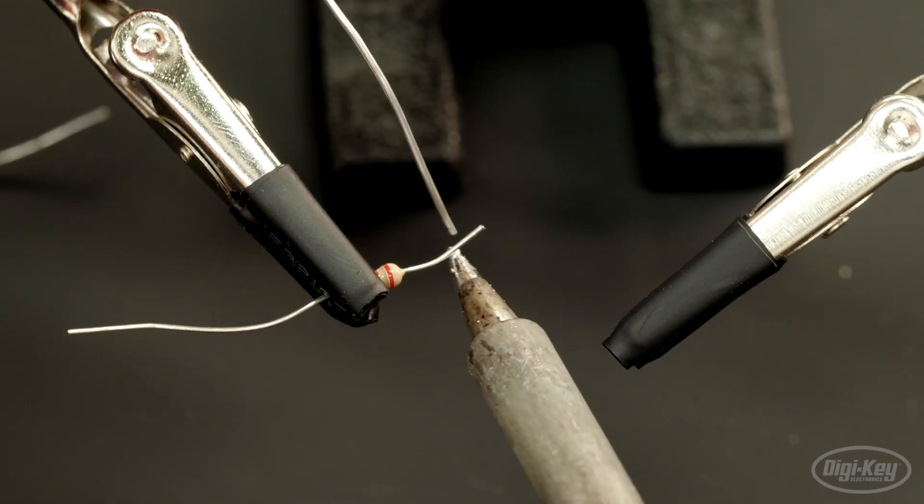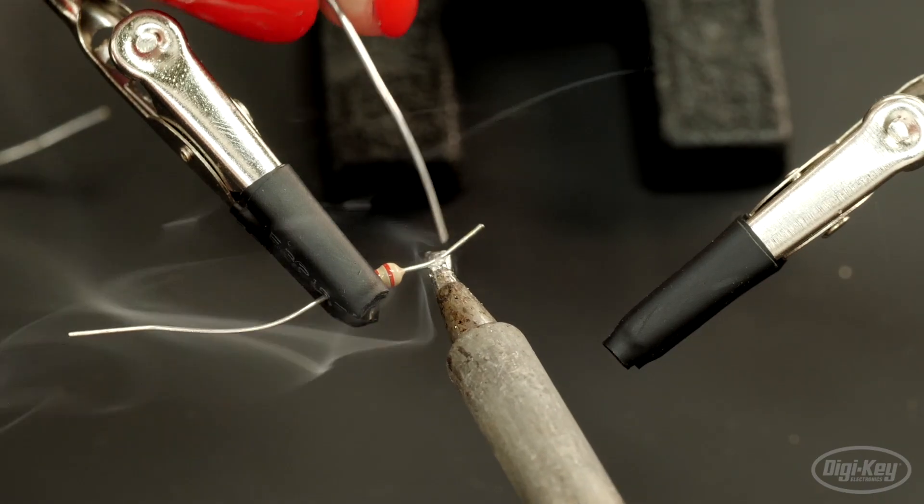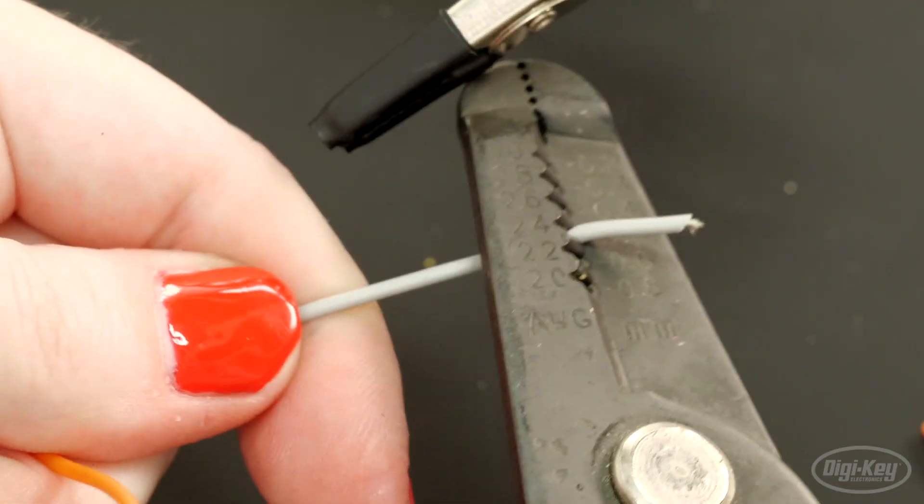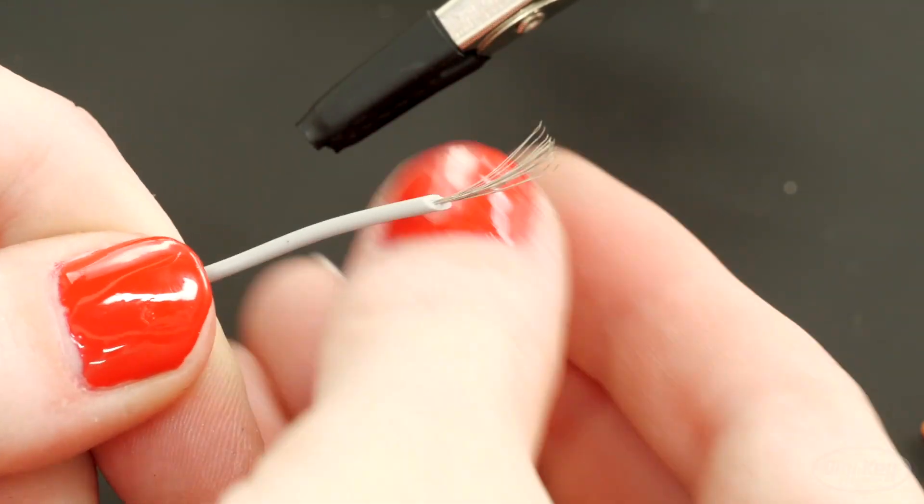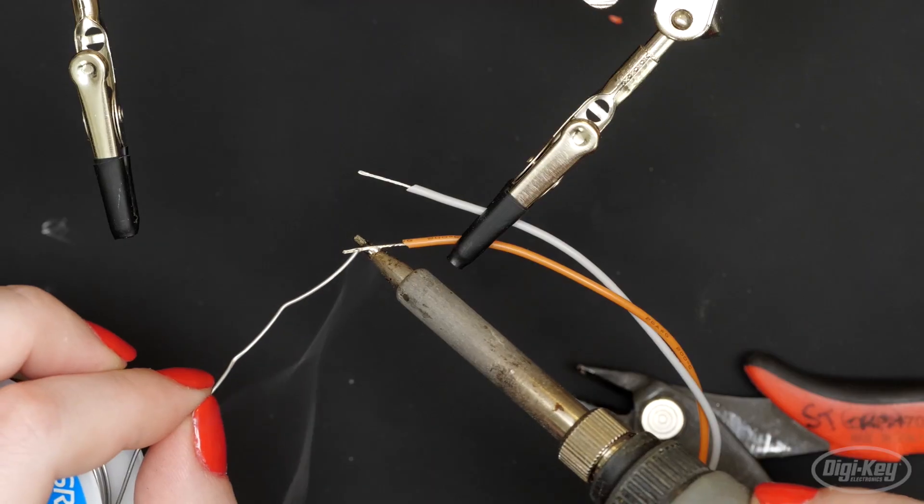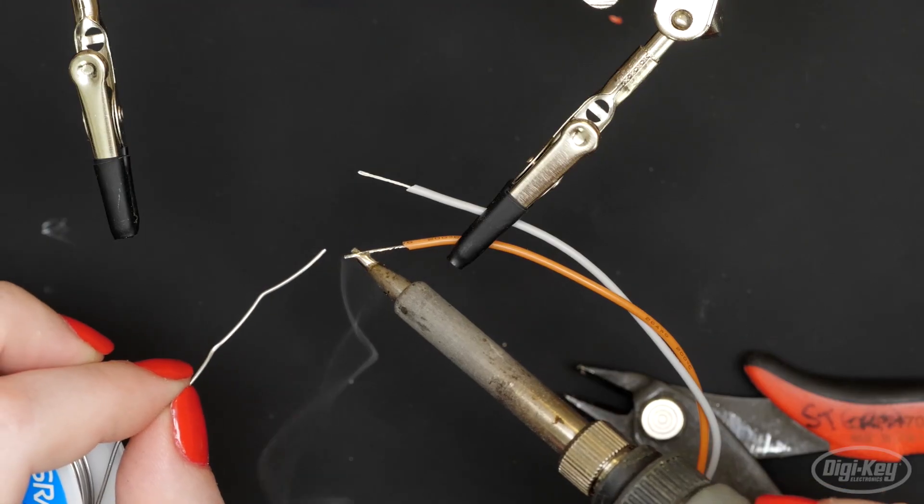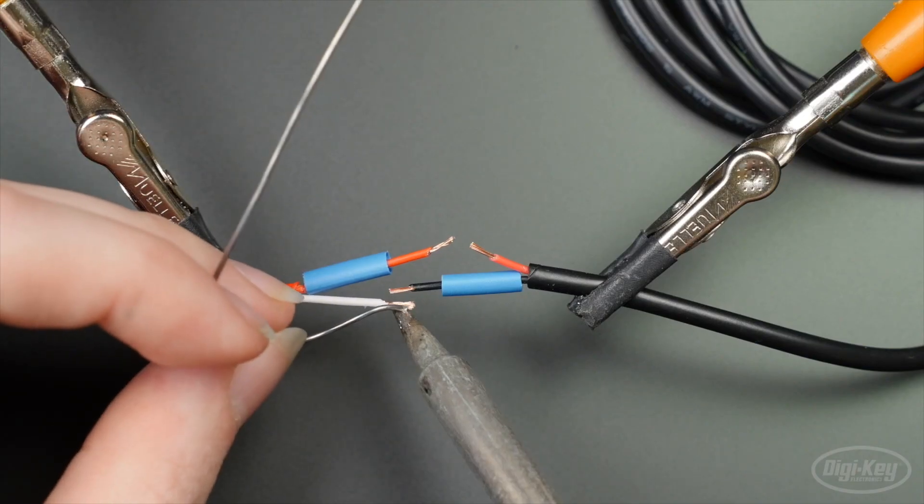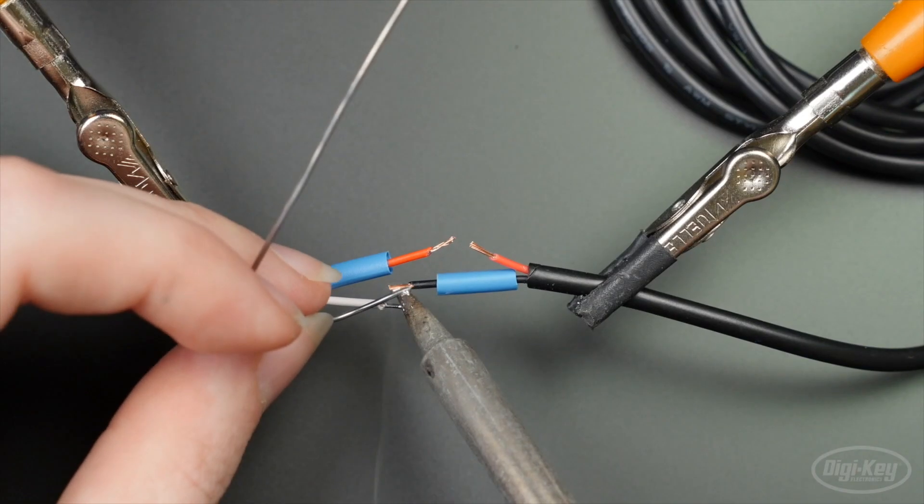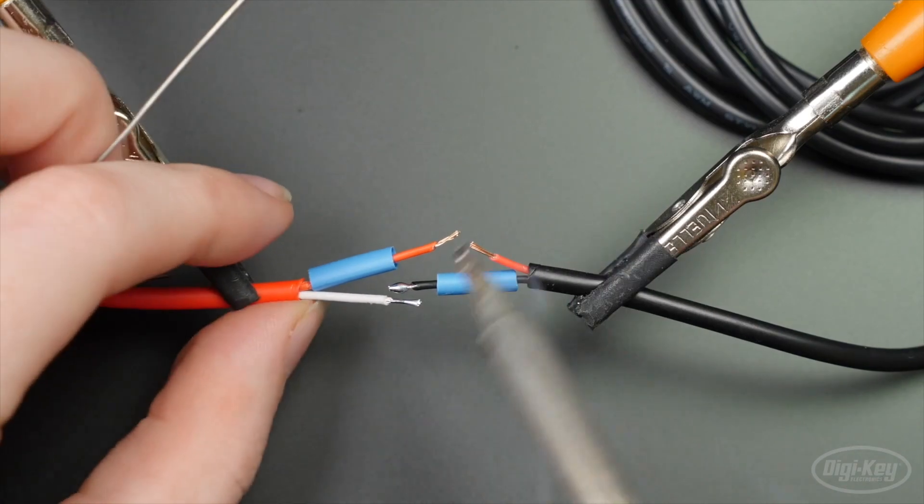Often, you'll find it useful to tin your parts before you solder them, especially with things like stranded wire. Applying a little solder first can help you keep the strands together when you hook it up to a circuit board or the other wire you're working with. The tinned solder re-flows when the joint is heated.